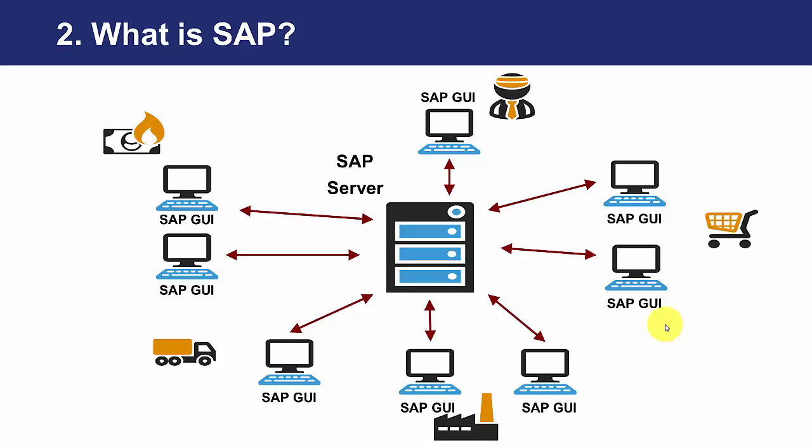A unique database is stored in the SAP server, where an SAP instance of the software has been installed. The different departments access it through a client program installed in their PCs, called SAP Win, but always connecting to a central and unique database.